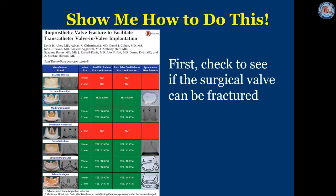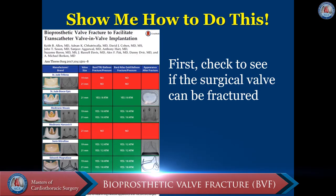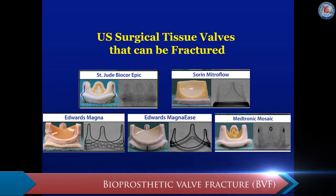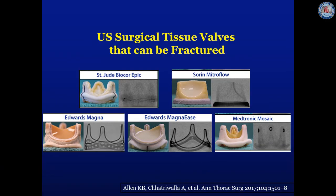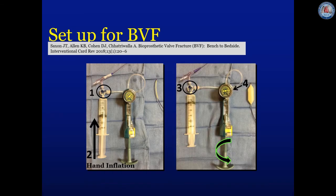How do you do this? The first thing you need to do is check that the surgical valve you're working with can actually be fractured or remodeled. These are the U.S. surgical tissue valves that can currently be fractured. The setup for BVF is fairly simple — it requires an end deflator and a 60 cc syringe with a non-compliant balloon, a high-pressure stopcock, and high-pressure tubing. Once you initiate rapid ventricular pacing, the stopcock is positioned so that you can do a rapid inflation of the non-compliant balloon from the 60 cc syringe. The stopcock is then turned to allow a rapid inflation of the end deflator until fracture occurs.